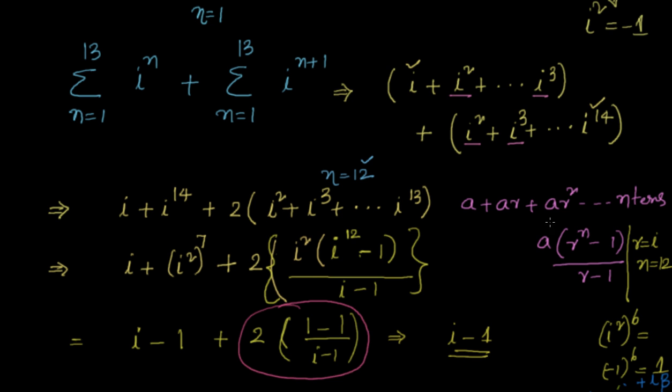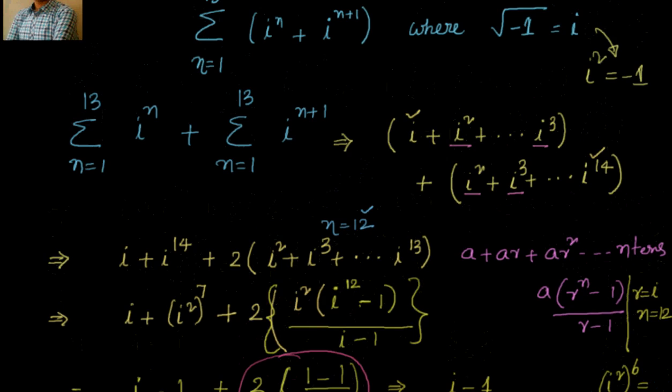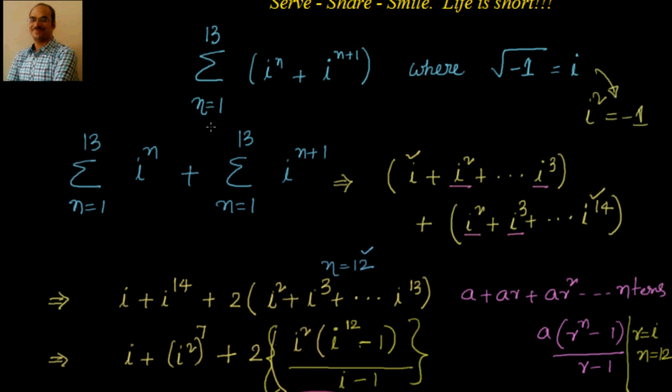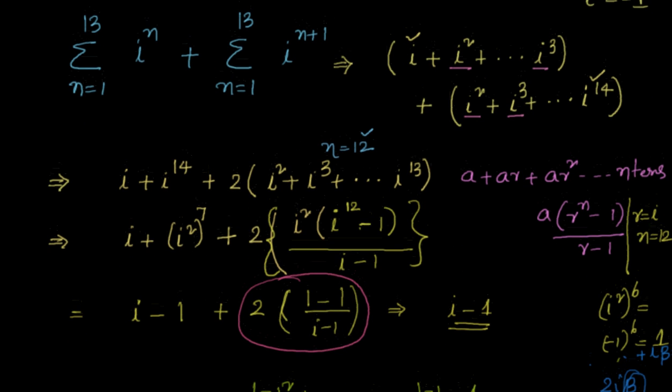So let us go through this once again. We have been given that we have to find the sum from n = 1 to 13 of i^n + i^(n+1) where n values are ranging from 1 to 13. We also have been given that i² = -1 or √(-1) = i. So what we did first, we separated them. Then we observed that other than the first and last, remaining all are repeating two times.